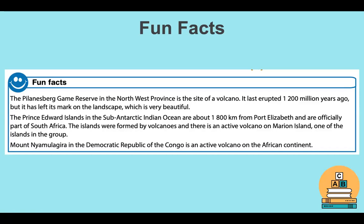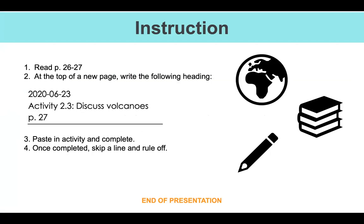For today's activity, you're required to read pages 26 to 27. As always, before we start a new activity, at the top of a new page copy down the heading with today's date: Activity 2.3, Discuss Volcanoes, page 27, rule off. You'll see your activity — especially those who completed their work during the lockdown period — there are questions that are the same, but I've added revision and additional questions. If you know the work twice as much, you can do twice as well. Once you're done with the activity, you can rule off. And that's the end of our presentation.